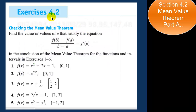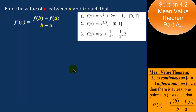For the rest of the video lecture, I'll work out exercises from section 4.2, checking the mean value theorem — finding the value or values of c that satisfy the equation f of b minus f of a all over b minus a equals f prime of c, which is the conclusion of the mean value theorem. For number 1, f of x is equal to x squared plus 2x minus 1 on the interval from 0 to 1.